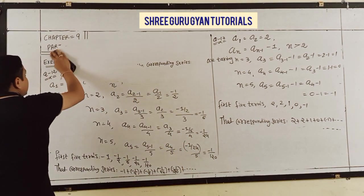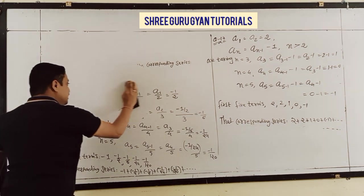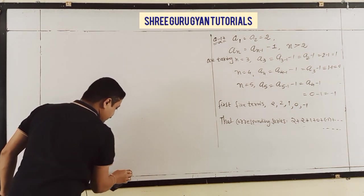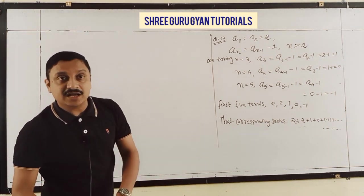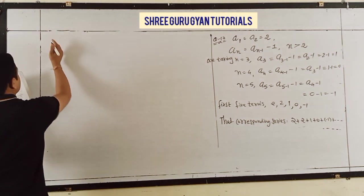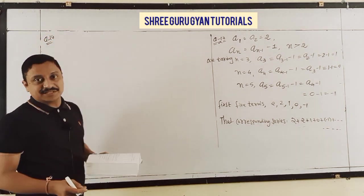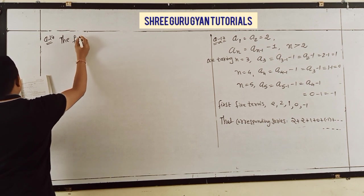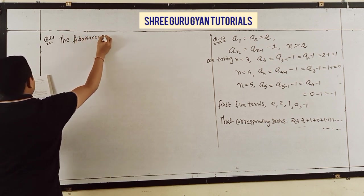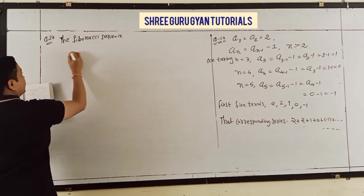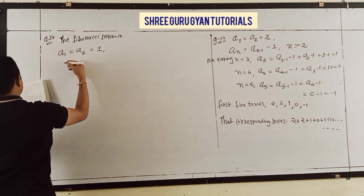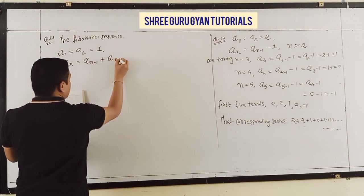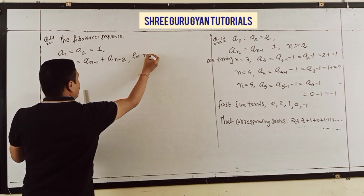Next, Question 14 is very important for the exam. The Fibonacci sequence is defined by a1 = 1, a2 = 1, and a(N) = a(N-1) + a(N-2) for N greater than 2. The question asks: find a(N+1)/a(N) for N = 1, 2, 3, 4, 5.